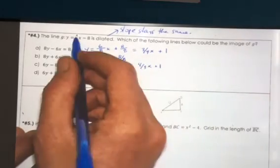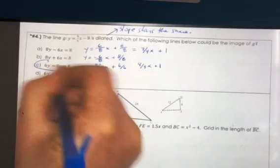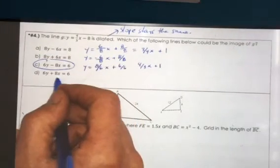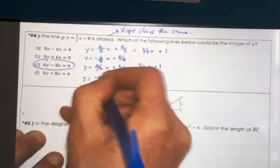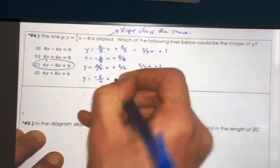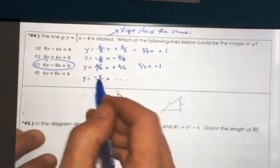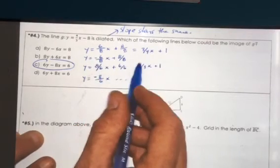The reason D is wrong is because this would give us y equals negative eight over six x. So this is a negative slope and we wanted a positive four thirds slope.